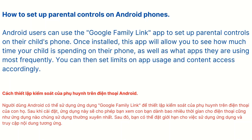Android users can use the Google Family Link app to set up parental controls on their child's phone. Once installed, this app will allow you to see how much time your child is spending on their phone, as well as what apps they are using most frequently. You can then set limits on app usage and content access accordingly.